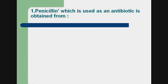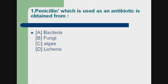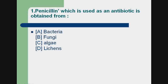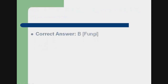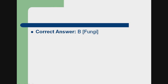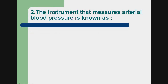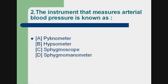Question 1: Penicillin, which is used as an antibiotic, is obtained from: a) bacteria, b) fungi, c) algae, d) lichens. Correct answer: b) fungi. Question 2: The instrument that measures arterial blood pressure is known as: a) pycnometer, b) hypsometer, c) sphygmoscope,